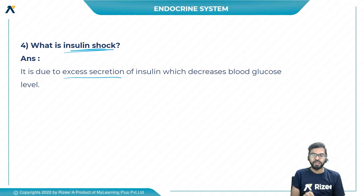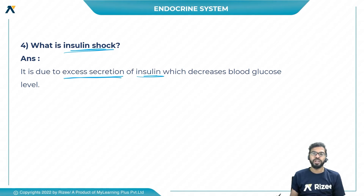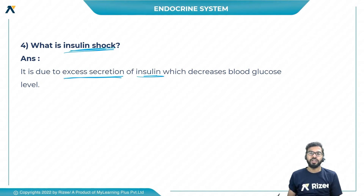Excess secretion — also called hypersecretion or oversecretion — of insulin will decrease the blood glucose levels. So this condition is called insulin shock.